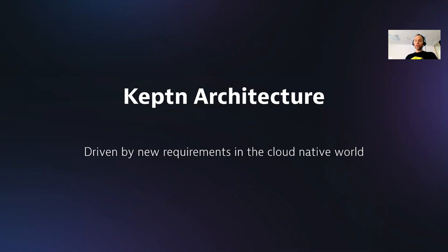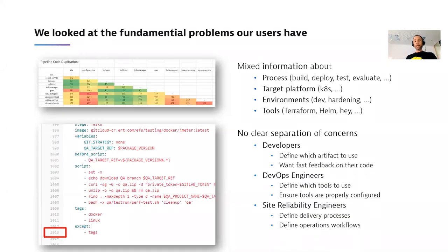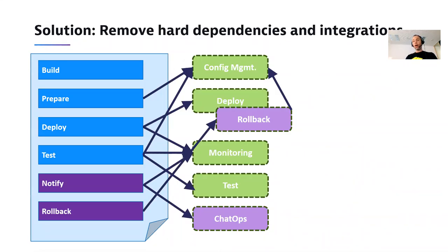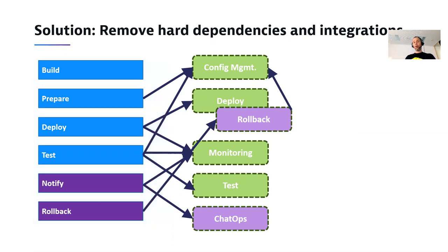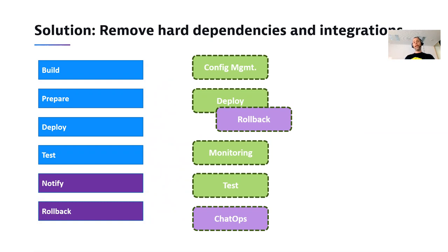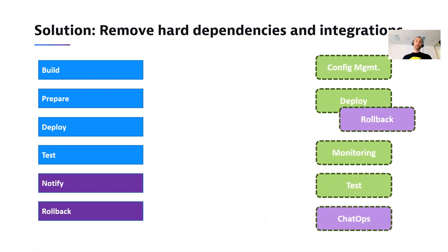Before I go into the demo, a quick architecture overview. The architecture was driven by requirements we've seen: pipelines and automation scripts that grew too fast because they had mixed information about processing, tooling, target platforms, and environments. There was no clear separation of concerns about what a developer, DevOps engineer, or SRE should do — everything was packed together. So we said: if you have processes on the left and hard-coded tool dependencies, why not break those dependencies apart? You have a process — build, prepare, deploy, test, notify, rollback — and on the right you have your tools, or rather capabilities.